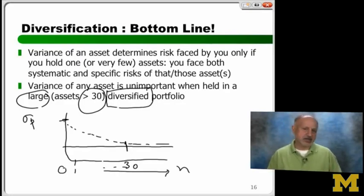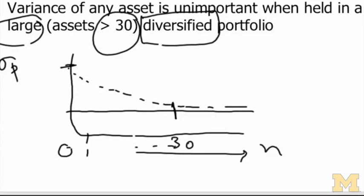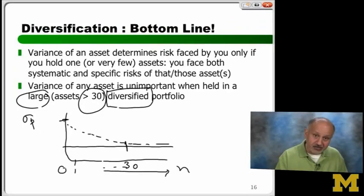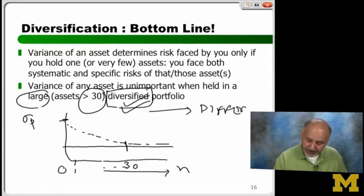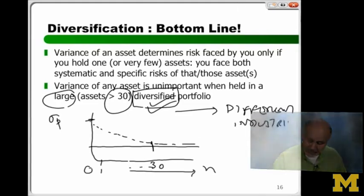30 is not a magical number, but around 30, things start behaving normally too. So as you progress — you start off with one, say Google, and you start adding others — those others have to be from different industries. What's key is diversification. Risk keeps dropping, dropping, dropping, till it levels off. When you randomly pick 30 things, you end up creating a portfolio that's pretty diversified, so adding more doesn't help.